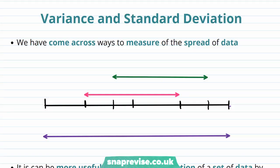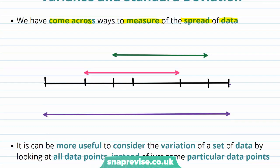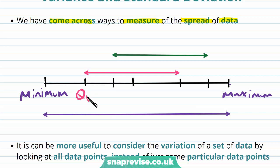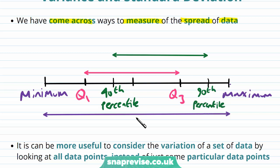So what exactly is variance and standard deviation? We've come across ways to measure the spread of data. Namely, if we have some data, we can find the minimum and maximum of the data. We can also find quartiles, such as the lower quartile and the upper quartile, and we can also find percentiles, such as the 40th percentile and the 90th percentile. Using the maximum and minimum gives us the range of the data, using the quartiles gives us the interquartile range (IQR), and using the percentiles gives us the interpercentile range.